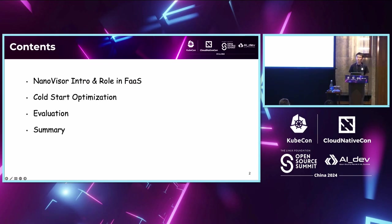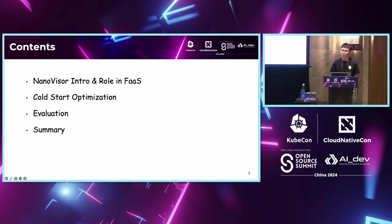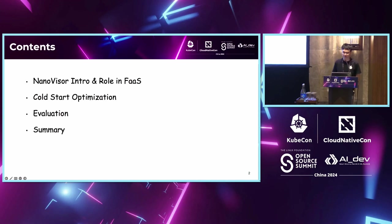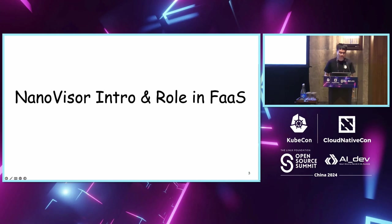First, I will introduce what NanoVisor is and what its role is in FaaS. FaaS means Function as a Service. Next, I will introduce our work on the cold start optimization, which we applied to NanoVisor. The third part will show some statistics about NanoVisor and its performance, and at last I will summarize our talk. So let's go to the first part: NanoVisor introduction and its role in FaaS.